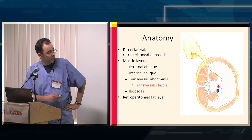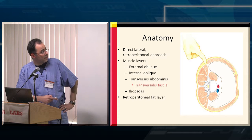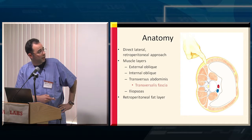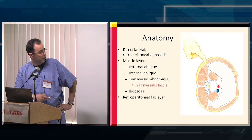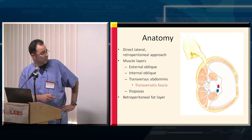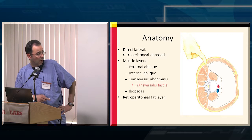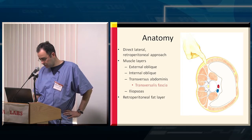As far as anatomy is concerned, we'll start with the layers you go through during the direct lateral retroperitoneal approach. You're going to go through the external oblique, followed by the internal oblique, then the transversus abdominis muscle, then the transversalis fascia. At that point, you're going to be able to palpate the psoas muscle and the transverse process. You'll be in the retroperitoneal fat at this point.